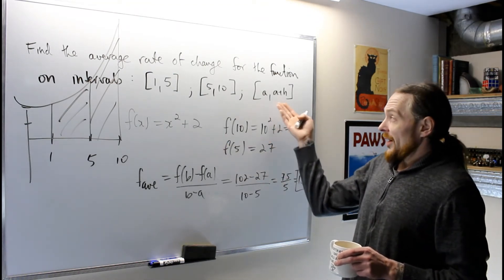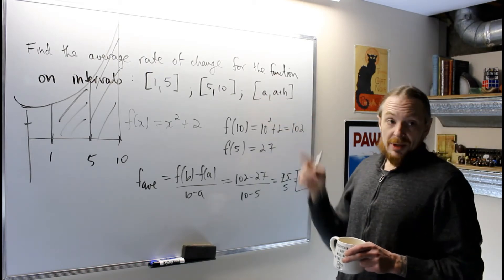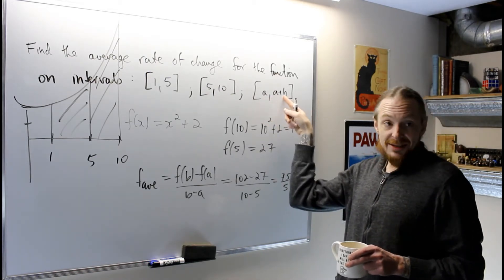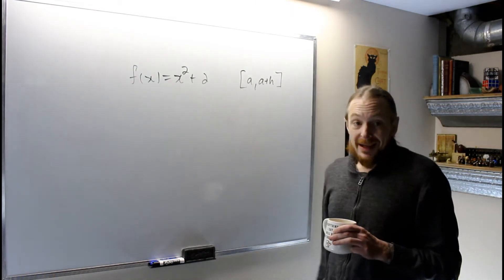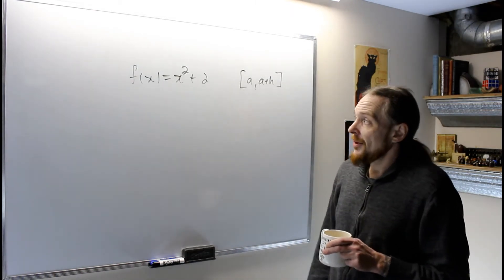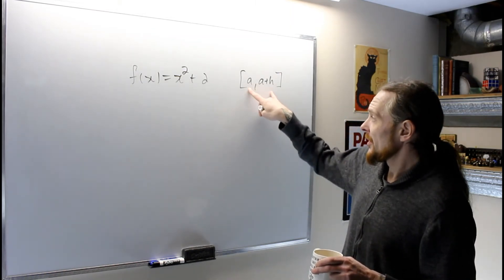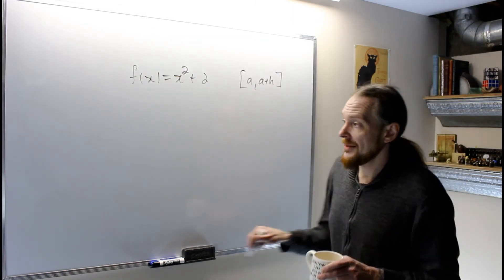Now the most important one is the interval [a, a+h]. For a general case, we're going to use the limiting process and put h to zero to create a derivative eventually. One last time, we have the same function, this parabola x² + 2, and we're going to compute this on an interval [a, a+h].